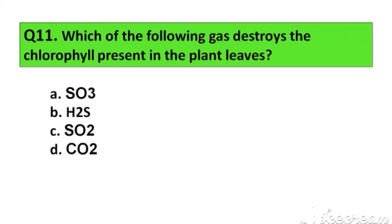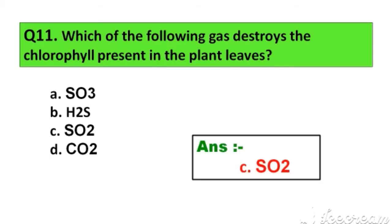Question number 11. Which of the following gases destroys the chlorophyll present in plant leaves? Option A. SO3, B. H2S, C. SO2, D. CO2. The right answer is Option C. SO2.